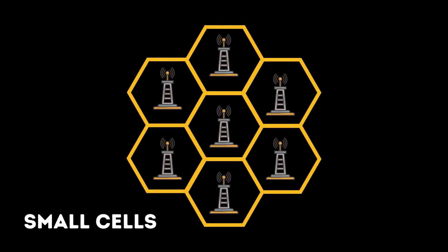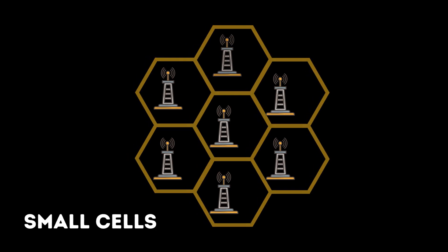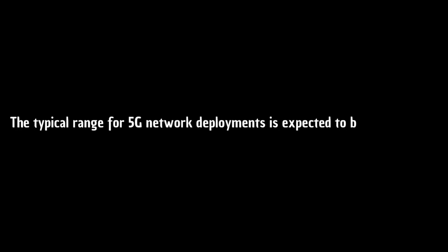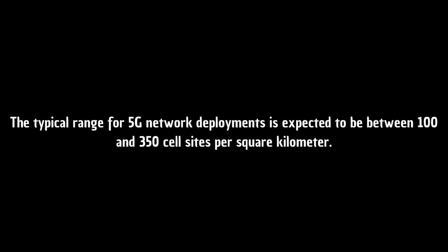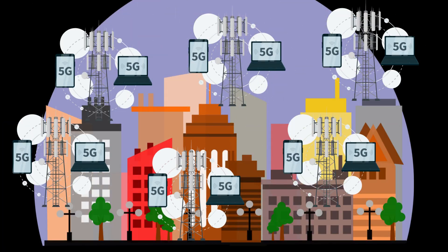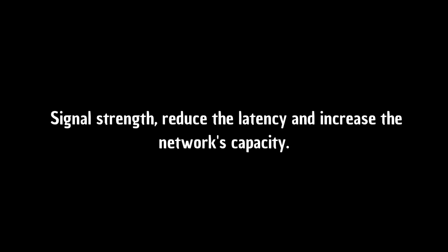Small cells are low-powered cellular base stations used to increase capacity and coverage in densely populated areas. The typical range for 5G network deployments is expected to be between 100 and 350 cell sites per square kilometer, which is significantly denser than what is required for 4G networks. This high density is needed to improve signal strength, reduce latency, and increase the network's capacity.